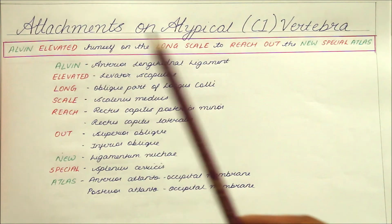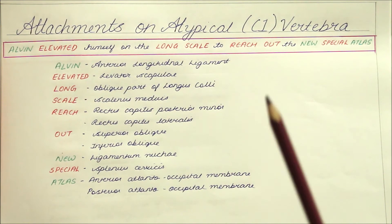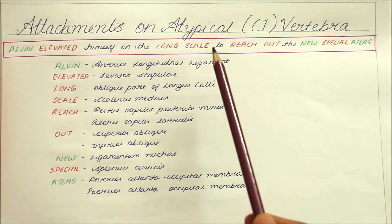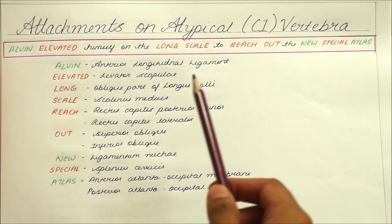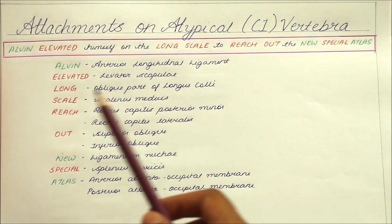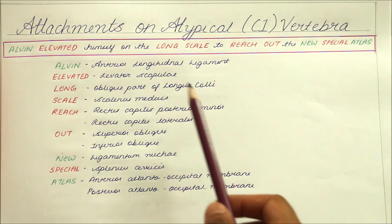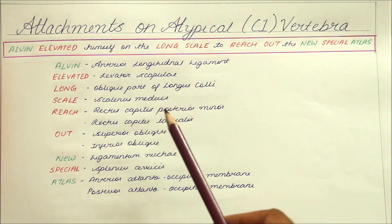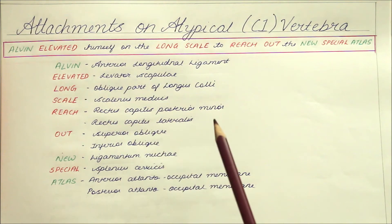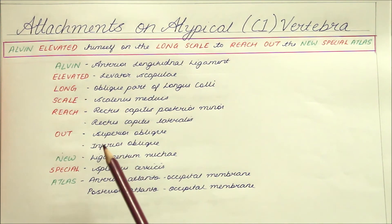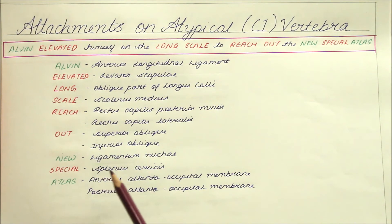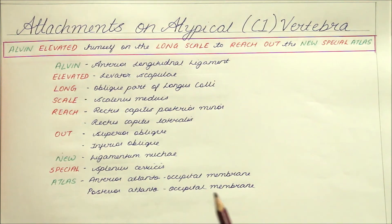An easy way to remember the attachments on the atypical C1 vertebra is by using the mnemonic: 'Alvin elevated himself on the long scale to reach out the new special atlas.' 'Alvin' = anterior longitudinal ligament; 'elevated' = levator scapulae; 'long' = oblique part of longus colli; 'scale' = scalenus medius; 'reed' = rectus capitis posterior minor and rectus capitis lateralis; 'out' = superior oblique and inferior oblique; 'nu' = ligamentum nuchae; 'special' = splenius cervicis; 'atlas' = anterior atlanto-occipital membrane and posterior atlanto-occipital membrane.